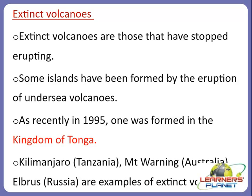Volcanoes give out gases like carbon dioxide and sulphur dioxide, which are very poisonous. These are normally quickly dispersed by the wind but can collect in hollows. High concentrations of these volcanic gases can cause suffocation, which is the most common cause of death following a volcanic eruption.